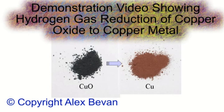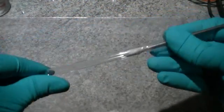This is a demonstration video showing the reduction of copper oxide using hydrogen gas. In this video we're going to use a glass pipette as our reduction tube.